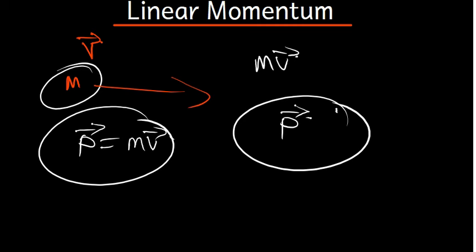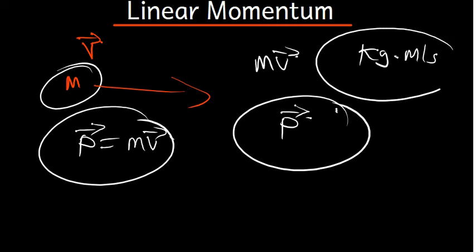Let's talk more about momentum. We know that mass is in kilograms and velocity is in meters per second. So the SI unit of momentum is kilograms times meters per second (kg·m/s). That is very, very important.